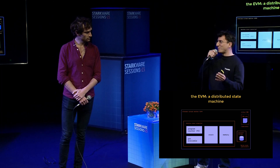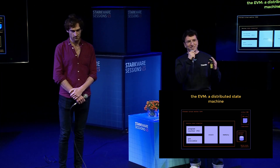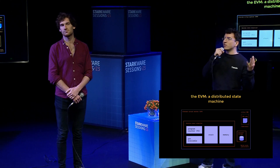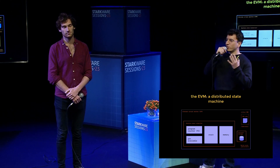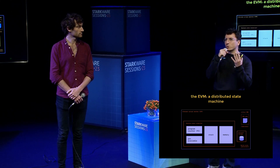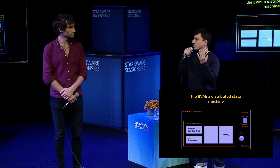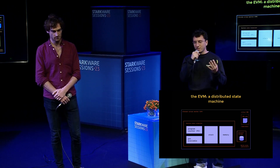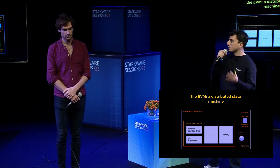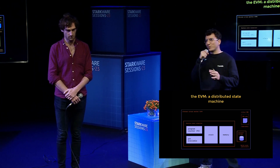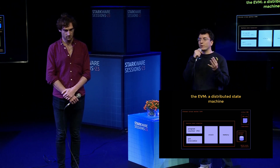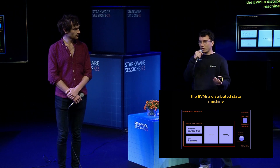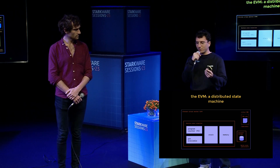First, maybe a bit of a primer for those who don't know — the EVM, the Ethereum Virtual Machine, what it is. It's a distributed state machine where all the smart contracts and storage live in an Ethereum-like chain: mainnet, Polygon, etc. It's a stack machine computer architecture, and for those who know, it differs from Cairo in that Cairo is based on Cairo VM registers. Here it's a stack machine.